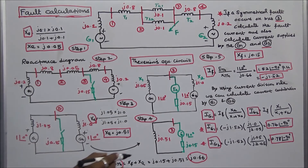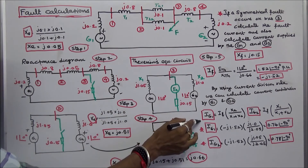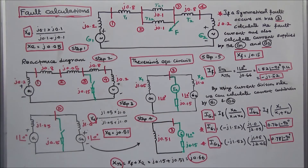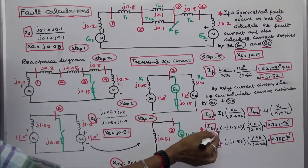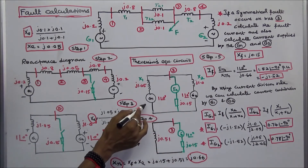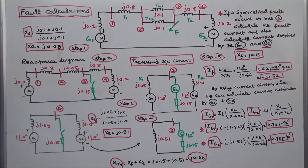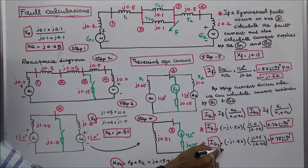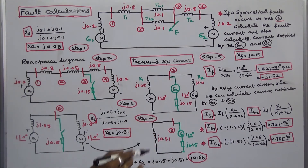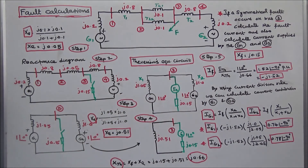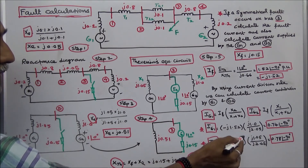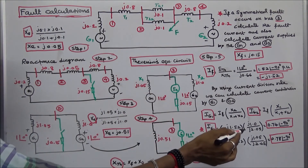The second part requires calculating the current supplied by generators G1 and G2 using the current division rule. IG1 equals the fault current multiplied by X2 divided by X1 plus X2, where X2 equals J1.0 and X1 plus X2 equals J2.05. With fault current minus J1.52, the current supplied by generator 1 is 0.74 angle minus 90 degrees. Similarly, IG2 equals minus J1.52 multiplied by J1.05 divided by J2.05, giving a current supplied by generator 2 of 0.78 angle minus 90 degrees.